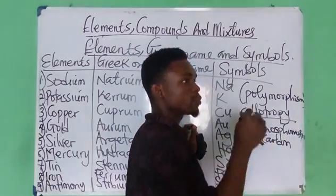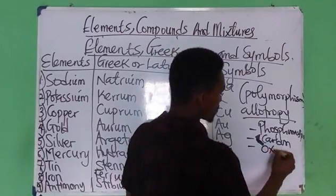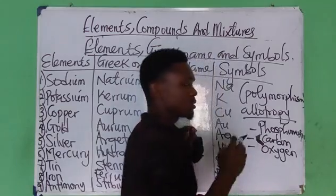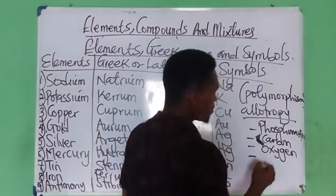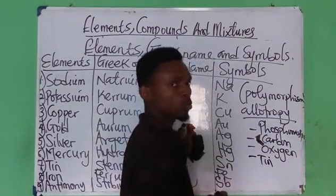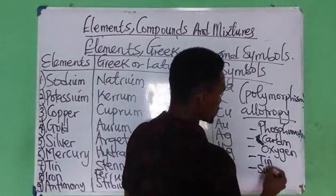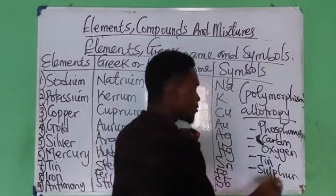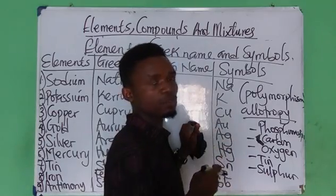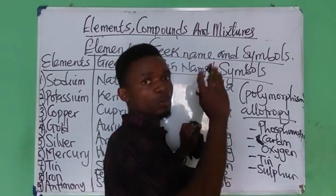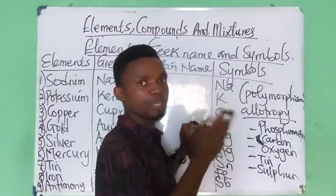The non-crystalline form is also called the amorphous form. Another example is oxygen: it has allotropes dioxygen (O₂) and trioxygen (O₃), which is ozone. Tin can also undergo allotropy — that is white and grey tin. Sulfur also undergoes allotropy: it has two crystalline forms — rhombic (or alpha) sulfur and monoclinic (or beta) sulfur.